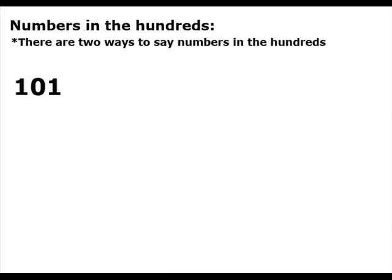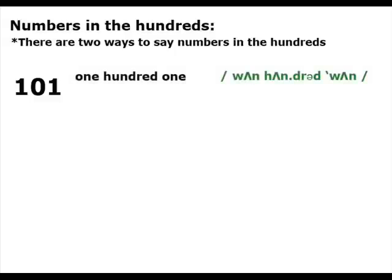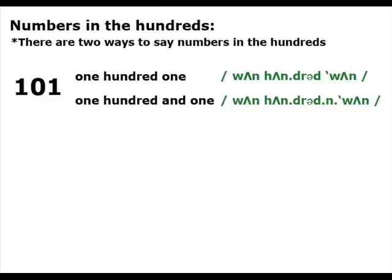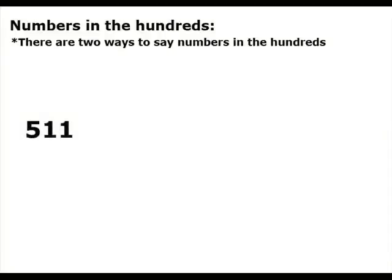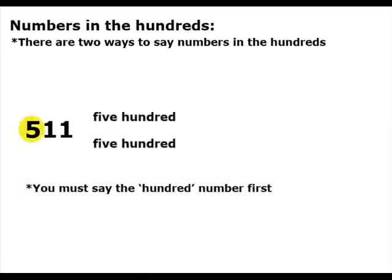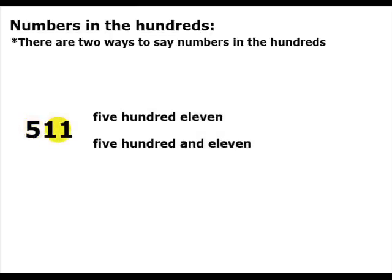There are two ways to say numbers in the hundreds. 'One hundred one' or 'one hundred and one', where the word 'and' becomes a reduced sound. One hundred and one. When saying numbers in the hundreds, you must say the hundred number first — five hundred — and then the next number: eleven. Five hundred eleven. Five hundred and eleven.